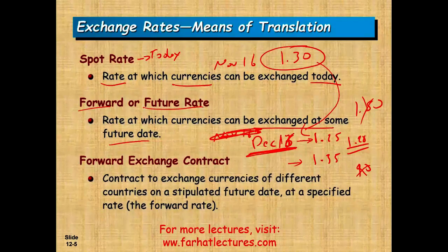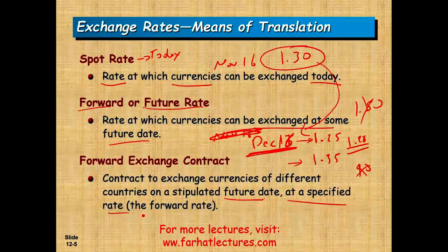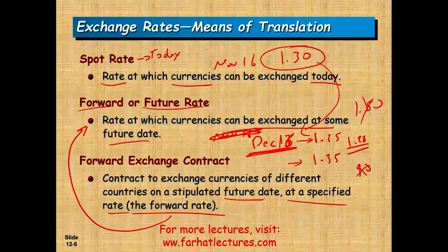A forward exchange contract is a contract to exchange currencies of different countries on a stipulated future date at a specified rate — the future rate. Someone might say: pay me $100 today as a fee and I will sell you euros at $1.28 on December 16th. They are guaranteeing the rate; it's their risk, and you pay them a fee.